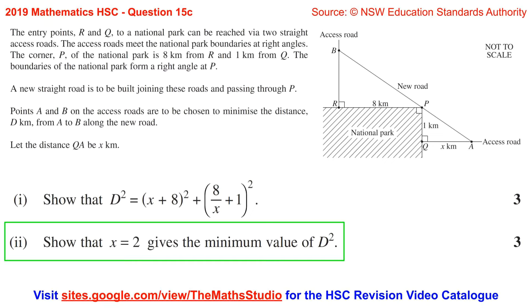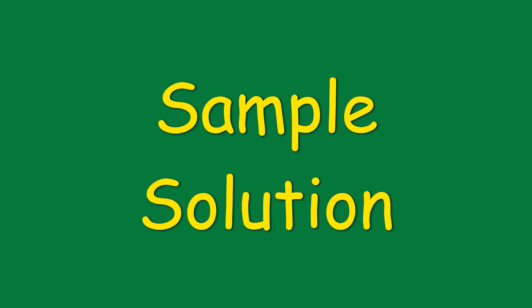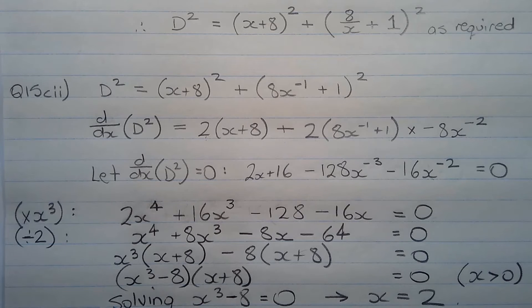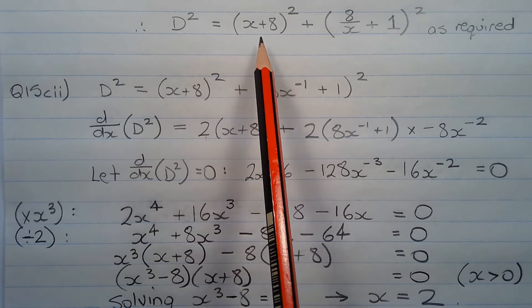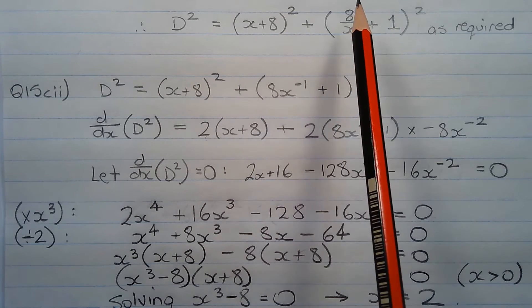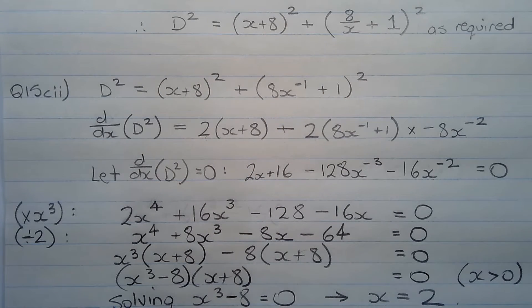Part 2. Show that x equals 2 gives the minimum value of d squared. From part 1, we have d squared equals (x+8)² + (8/x+1)².